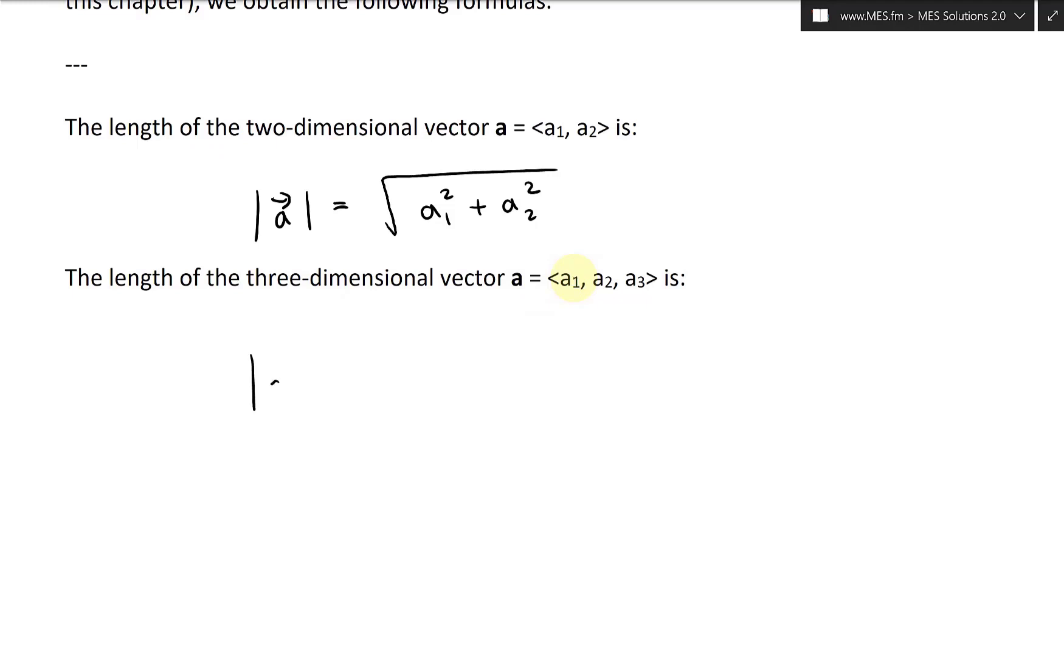So vector a equals the absolute value of it, or the length, is going to be equal to square root of a1 squared plus a2 squared plus a3 squared.